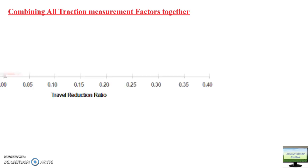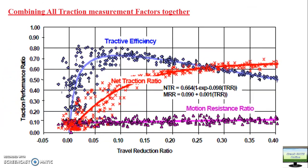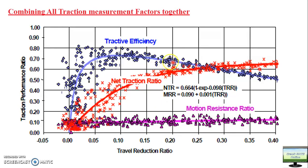I will put all five factors on a single graph. On this graph, the y-axis is the traction performance ratio - all ratios - and the x-axis is the traction reduction ratio, meaning slip. The motion resistance ratio doesn't vary with slip, so it is almost constant, because it is a function of weight. There are many data points from which these lines have been derived.